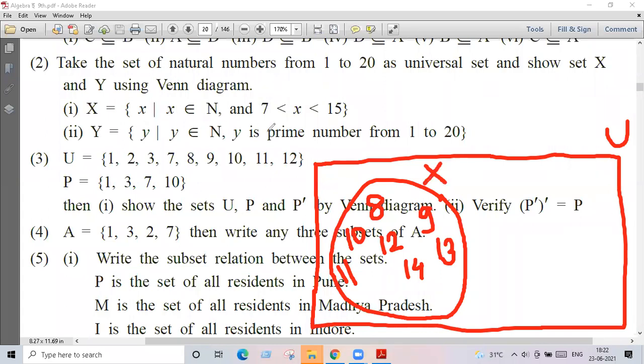Y is prime numbers from one to twenty. So which is the prime numbers from one to twenty?